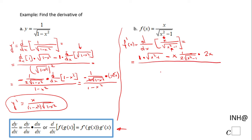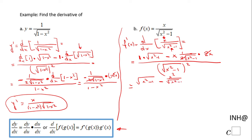I moved a little bit faster there; if you need to go slower, refer back to part A. Don't forget the denominator of this complex fraction is square root of x squared minus 1, squared. I applied the chain rule and the quotient rule in this step. Now simplifying: we get square root of x squared minus 1, minus — the two twos cancel — x squared over the square root of x squared minus 1, all over x squared minus 1.